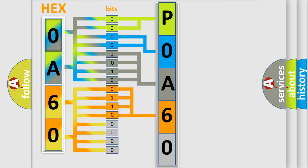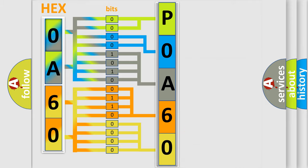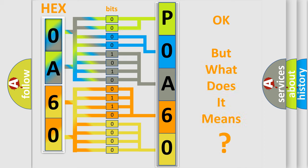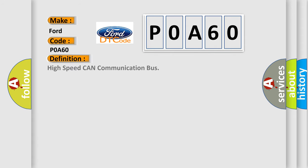A single byte conceals 256 possible combinations. We now know in what way the diagnostic tool translates the received information into a more comprehensible format. The number itself does not make sense to us if we cannot assign information about what it actually expresses. So, what does the Diagnostic Trouble Code POA60 interpret specifically for Infiniti car manufacturers? The basic definition is: high-speed CAN communication bus.